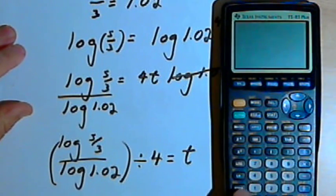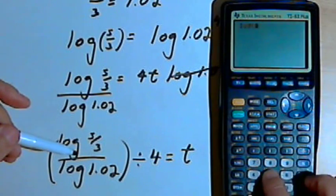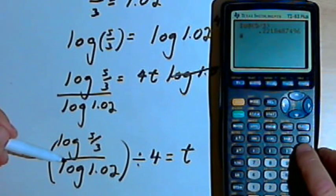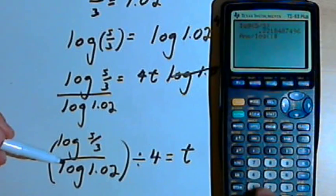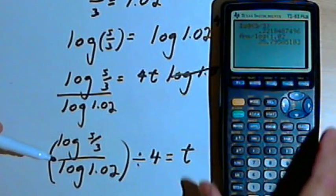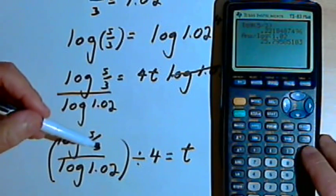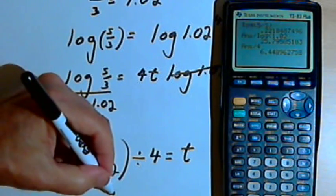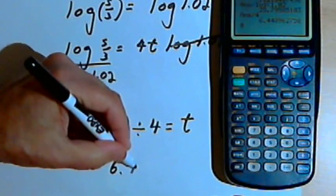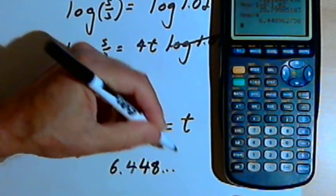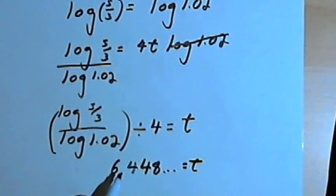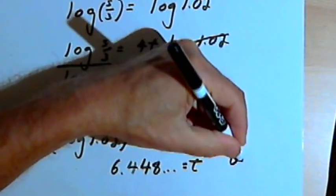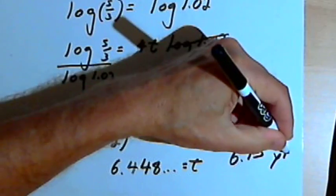At this point we use a calculator. So we'll find out what the log of 5 thirds is. After we've got that, we want to divide it by the log of 1.02. And when we've got that, we'll divide that answer by 4. And we end up with 6.448 and that equals t. I'm going to round this to two decimal places. So I'm going to get that time is 6.45 years.